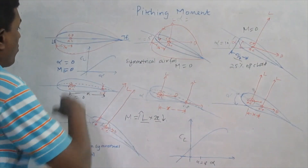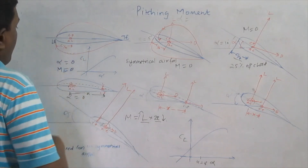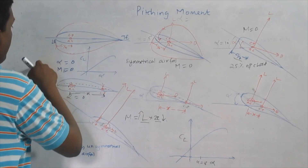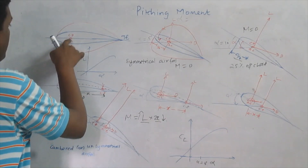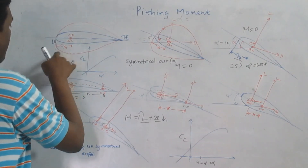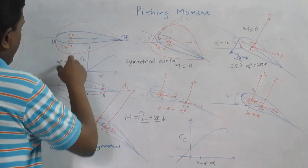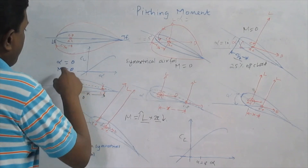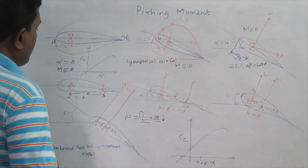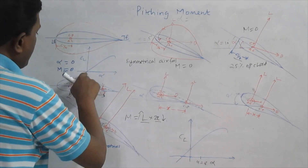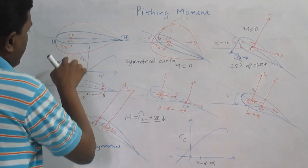So in the case of a Symmetrical Aerofoil, both the Aerodynamic Center and Center of Pressure lie at the same point. That point is the quarter chord point, meaning the distance from the leading edge to this point is 25% of the chord. And in the case of angle of attack zero, the Pitching Moment is also zero. That is because at angle of attack zero, the lift is zero, and lift is responsible for generating the Pitching Moment.